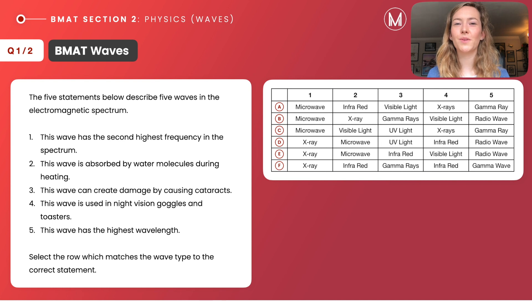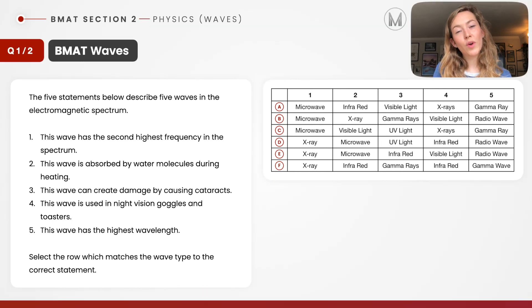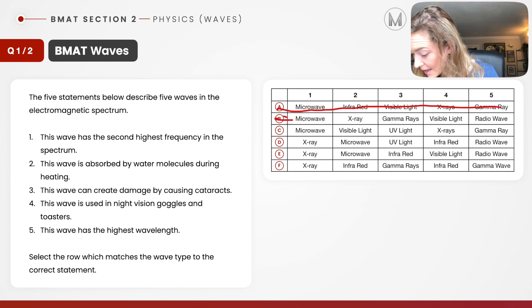Here we have our first practice question. Pause the video and give it a go. I've got a grid of answers here. I'm going to use the elimination technique. It'll speed me up too. Let's go to statement one. This wave has the second highest frequency in the EM spectrum. I already know straight away that is going to be x-rays. So I can eliminate half of my options immediately. I can get rid of A, B, and C options.